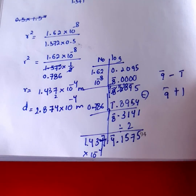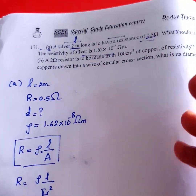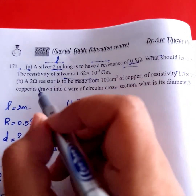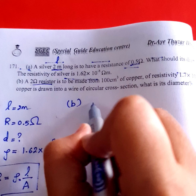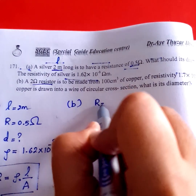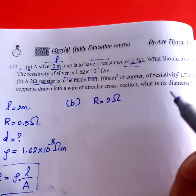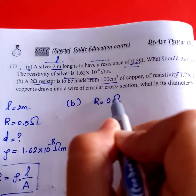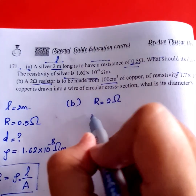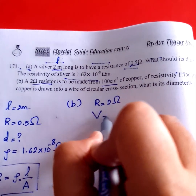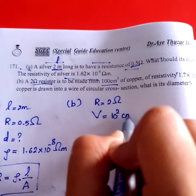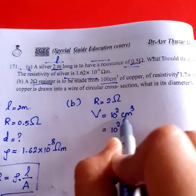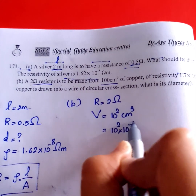Okay, now let's go. Number B is a dual resistor. This is a dual resistor. This is made from 100 cm, and we have to add to CM2. CM2 is the cross-sectional area.